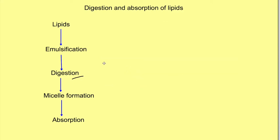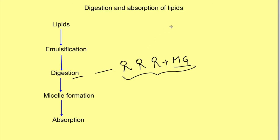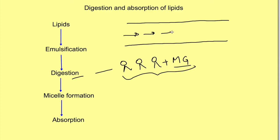Digestion releases free fatty acids and monoglycerides, but all these are water insoluble. Digestion has taken place in the lumen of the intestine, and absorption must occur via cells lining the intestine. These digested products must travel from the lumen to the cell surface and pass through it. The intestinal cells are covered by a thick unstirred aqueous water layer, so getting through this layer is achieved by micelles.